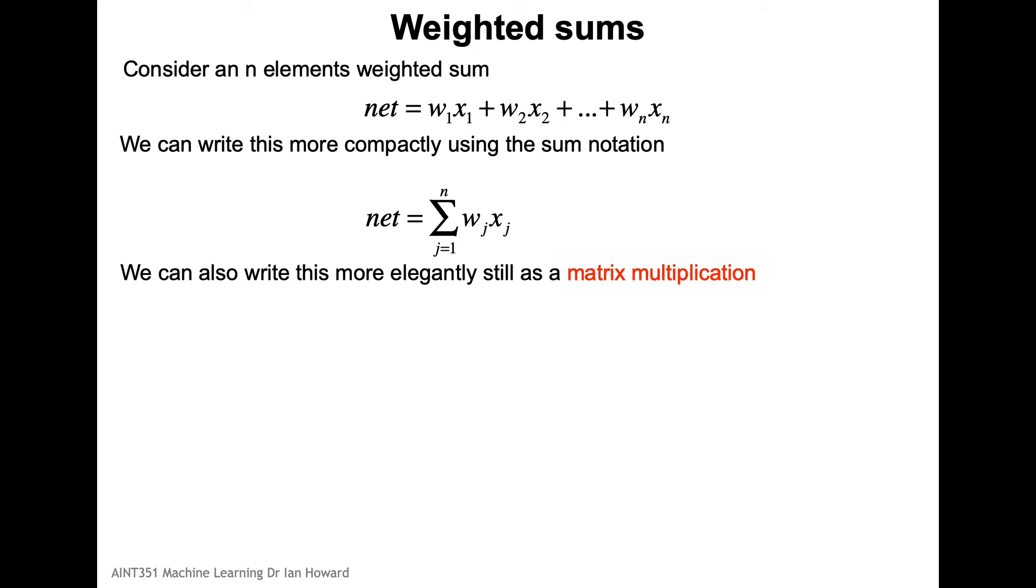However, it's even nicer in my opinion and much more elegant to write it as a matrix multiplication. Rather than writing it in terms of each element like this, what we can do is build a vector. We can build a vector of the weights, and this is a row vector. In this case it's going to be one row by n columns. Then we can put all the x data into an x vector. In this case it's going to be a column vector with x1, x2 and so on going all the way up to xn. Because of the way matrix multiplication works, it's always rows by columns. So we multiply the first element in w with the first element in x and add it to multiplying the second element in w with the second element in x, and so on all the way up to wn times xn.